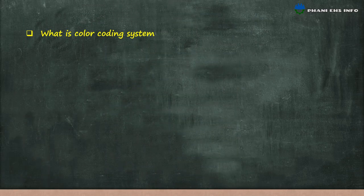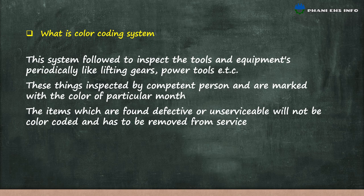What is the colour coding system? This system is followed to inspect tools and equipment periodically, such as lifting gears, power tools, etc. These items are inspected by a competent person and are marked with the colour of the particular month. Items which are found defective or unserviceable will not be colour coded and must be removed from service.